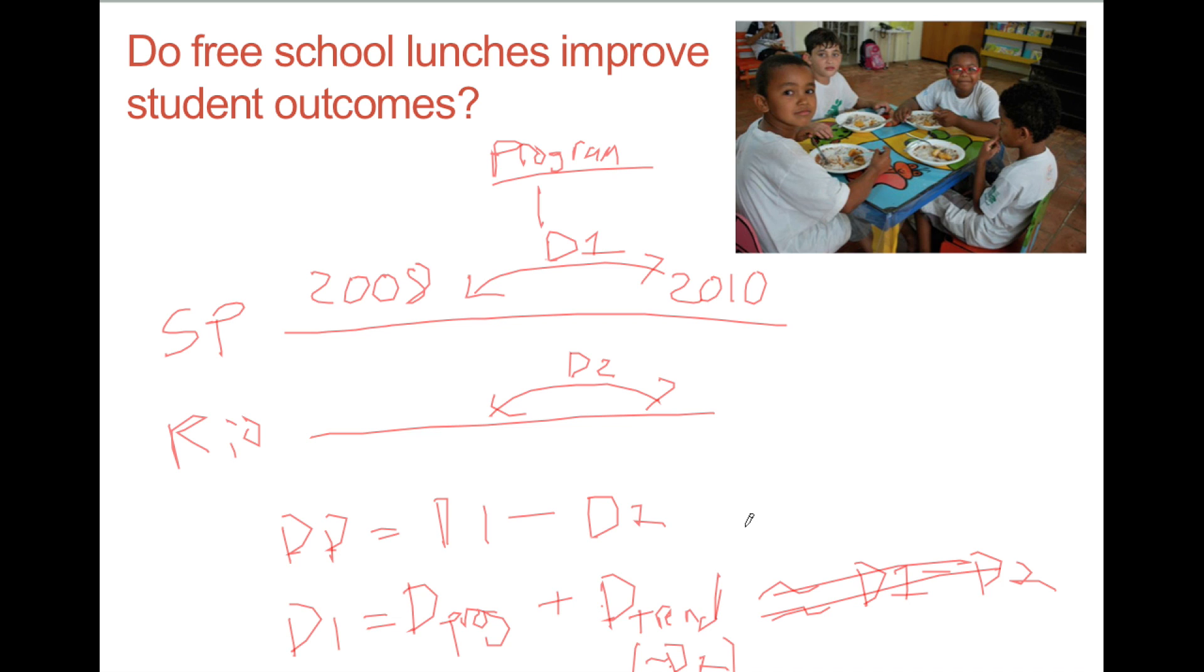It's not the only way to get the diff-in-diff estimate from this data though. You can also start with the simple difference between the test scores in Sao Paulo and Rio in 2010. Let's call that difference D3. This difference is going to be the sum of the program effects and whatever differences might exist between the two areas that has nothing to do with the program.